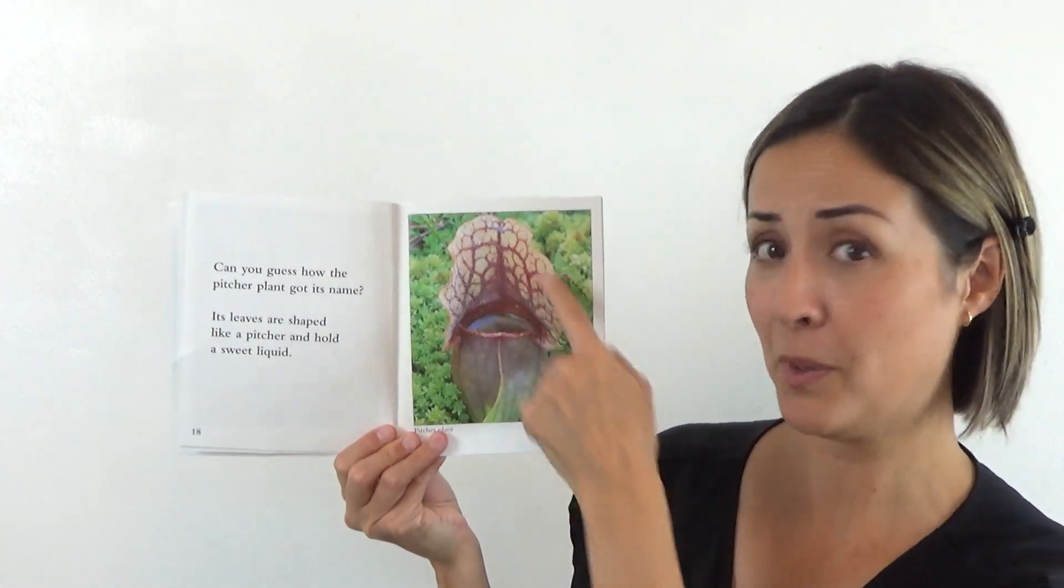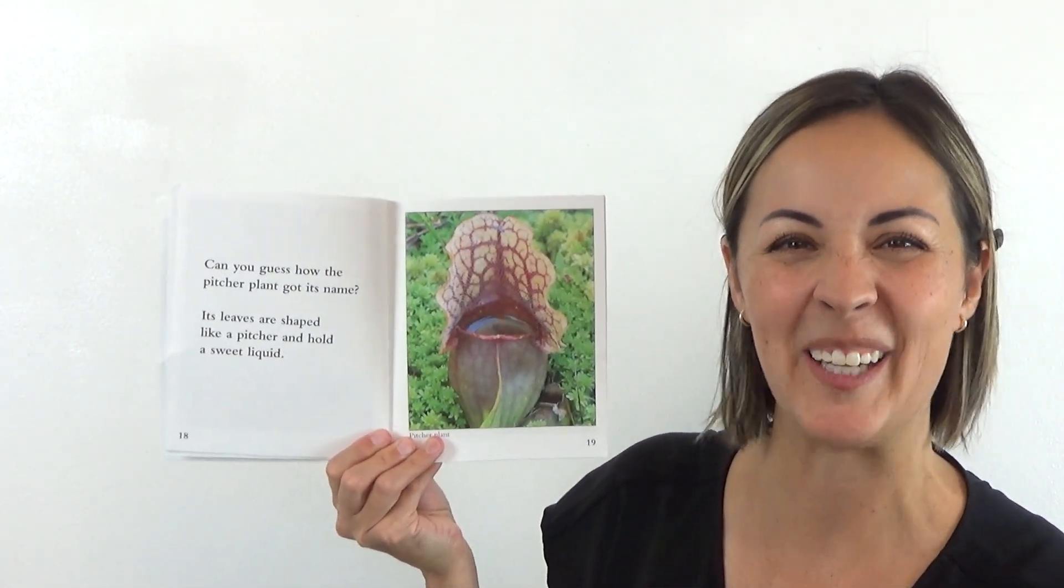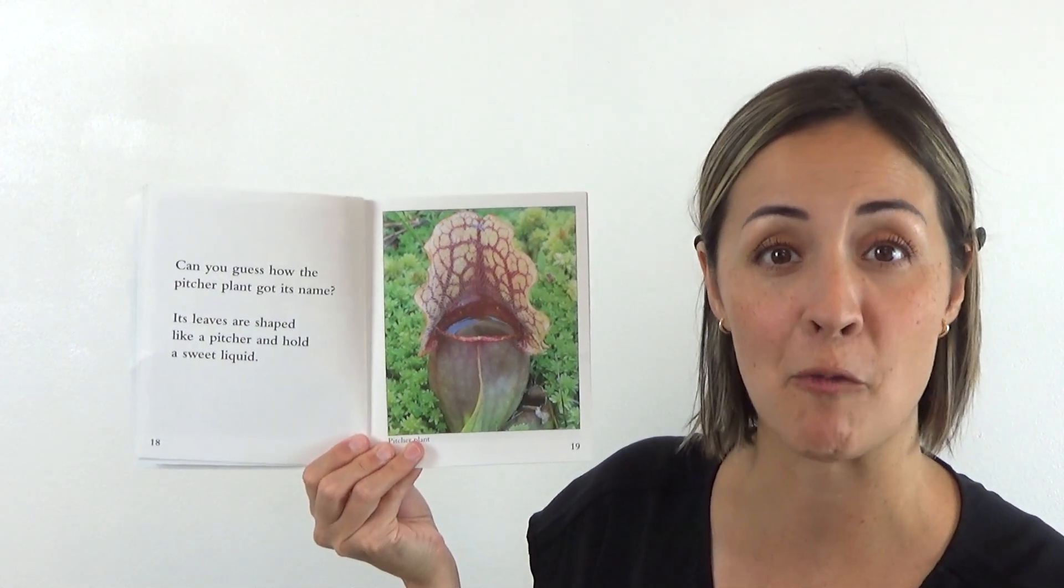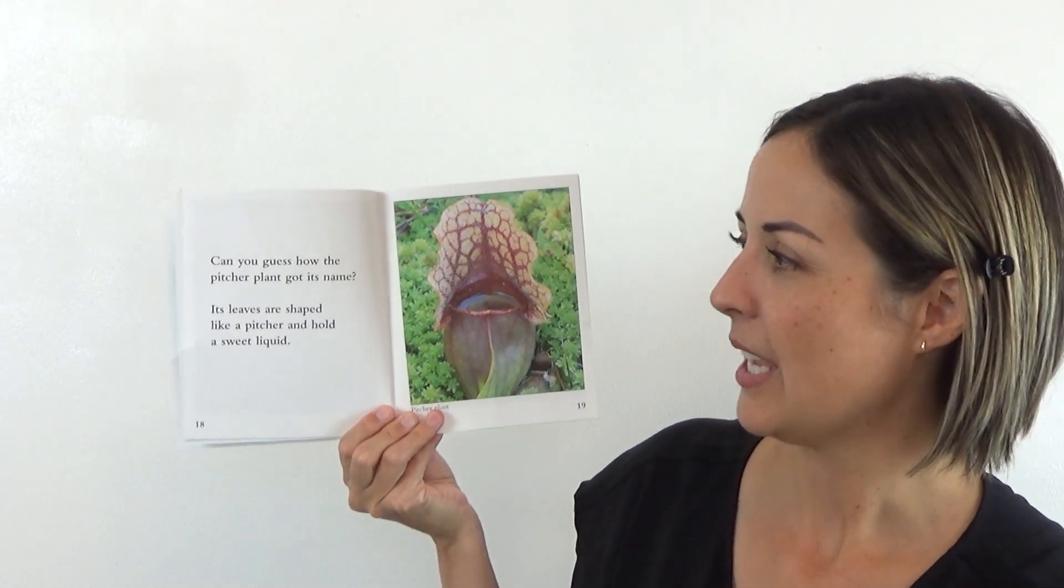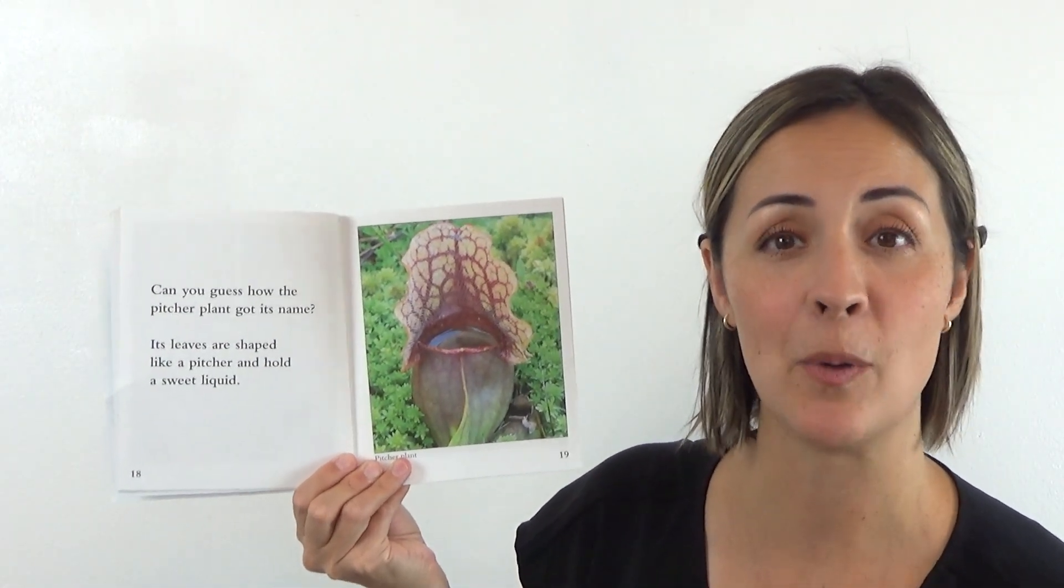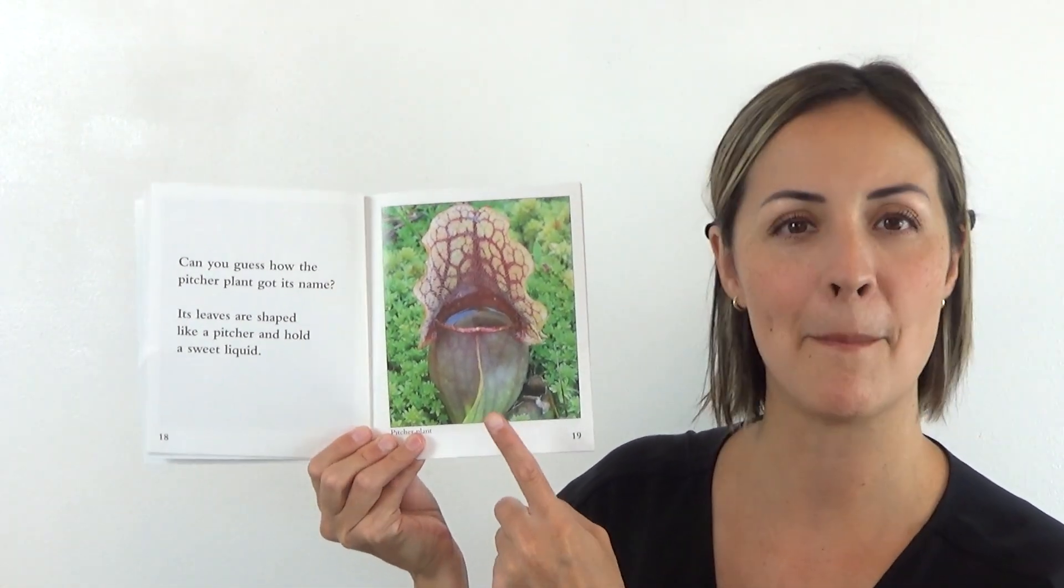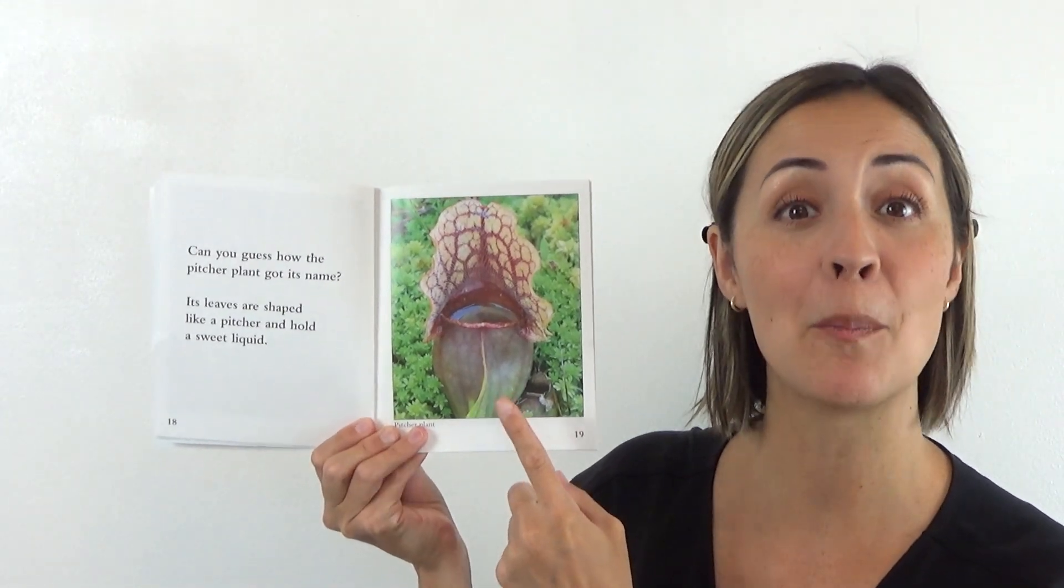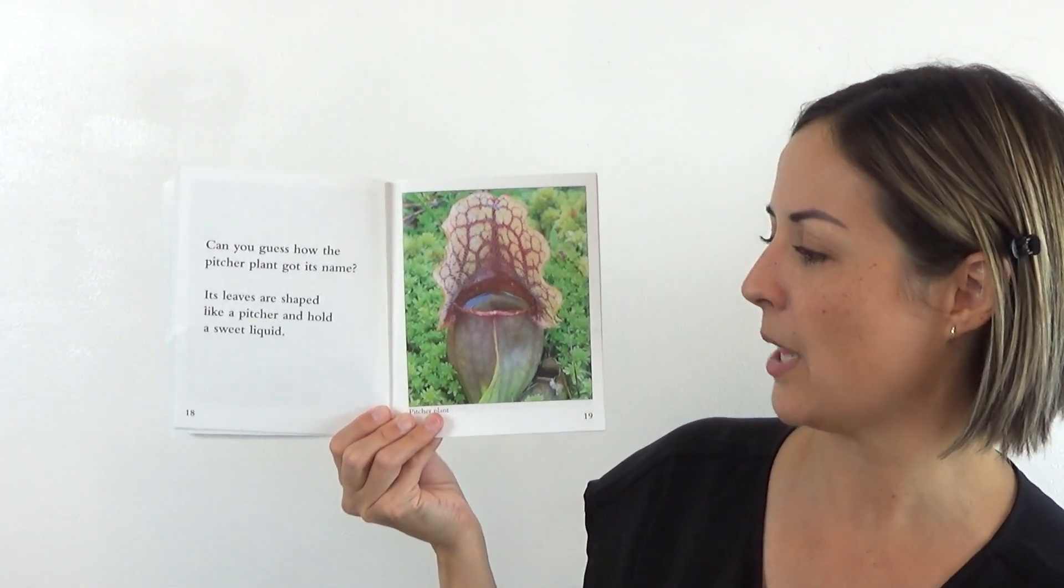Can you guess how the pitcher plant got its name? We can, because of course it looks like a pitcher of water or juice. Its leaves are shaped like a pitcher and hold a sweet liquid. Oh, can you say pitcher plant? Ready? It's a pitcher plant. Yeah. This is a pitcher plant.